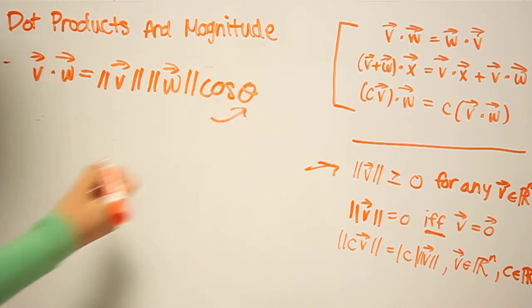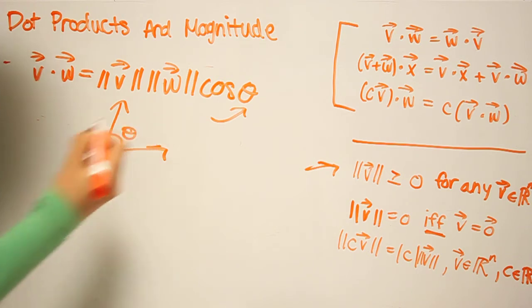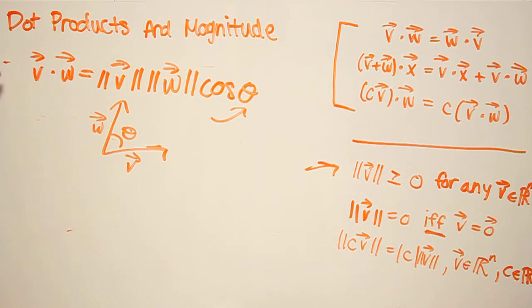where theta is the smallest angle that lies between the two vectors. So something like this, if this was V and this was W. And from this, we can sort of derive the Cauchy-Schwartz inequality.